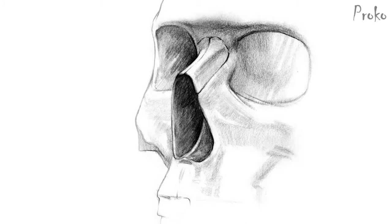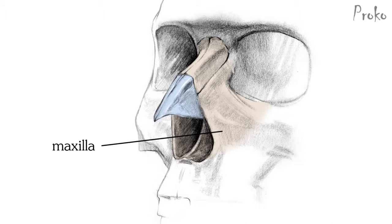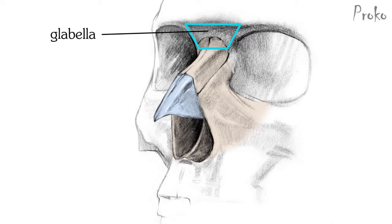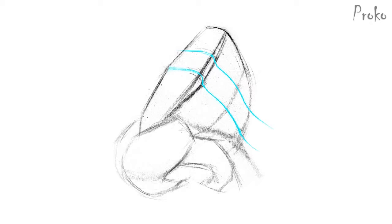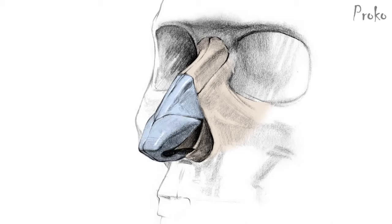The bridge. The top half of the bridge is the nasal bone, and the lower half is the lateral cartilage. The side plane is a bone called the maxilla, and at the top, the nasal bone connects to the forehead at the glabella, which is a keystone-shaped plane that faces downward. The edge of the nasal bone and lateral cartilage has a thin, sharp ridge as it transitions to the side plane and connects to the maxilla. The lateral cartilage is pointy and wedges between the two pieces that make up the ball of the nose.